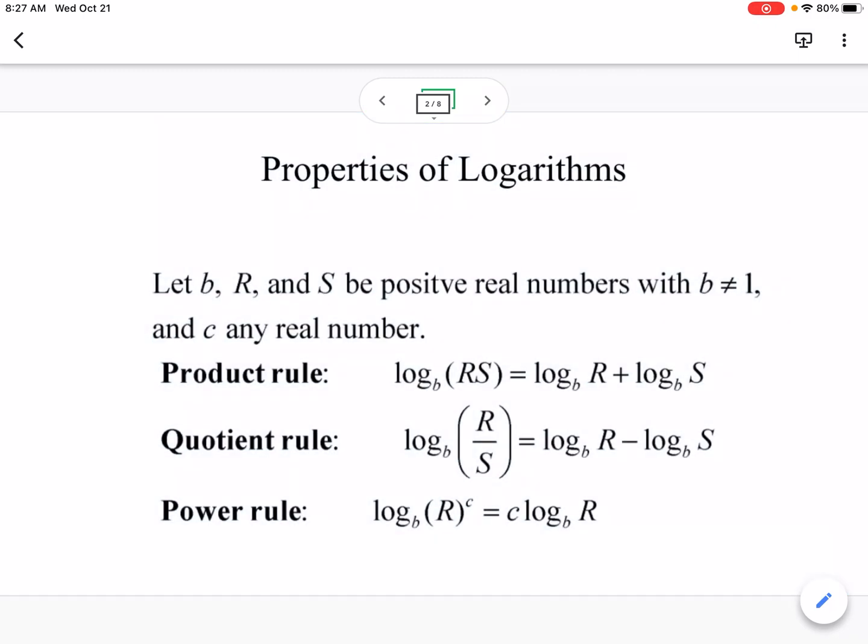So reviewing properties of logs. We have our three properties here – product rule. Product rule says that if we have two things that are being multiplied, then they expand to addition. Quotient rule says that if we are dividing, then it's going to expand to subtraction. And power rule says if we're raising it to a power, we can put that value out front with multiplication.